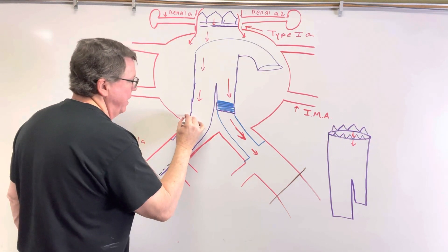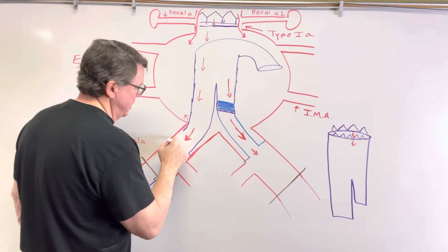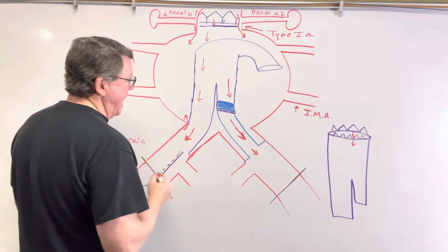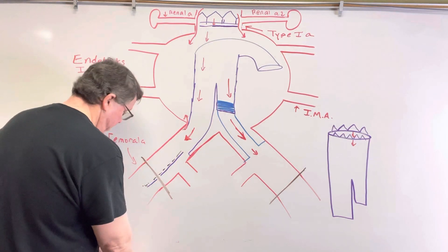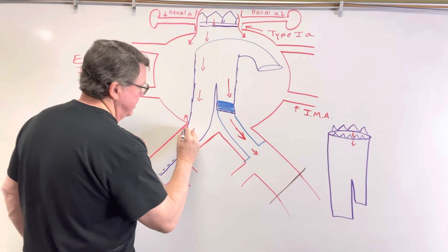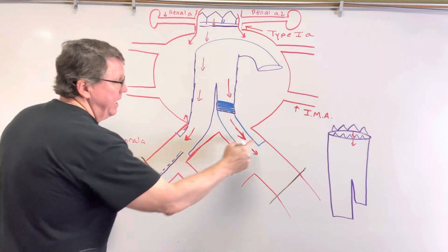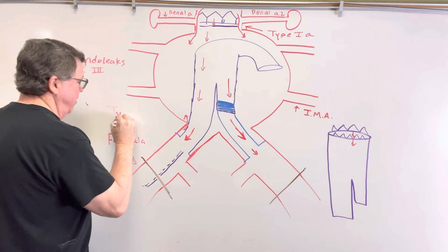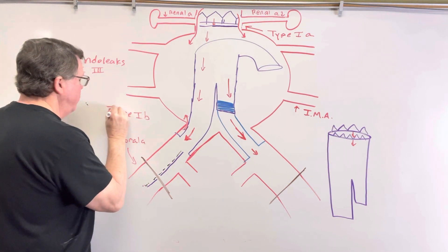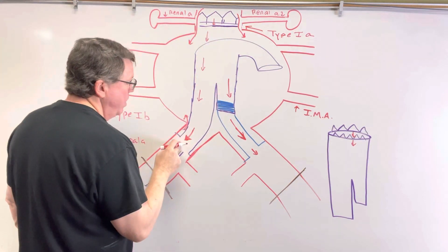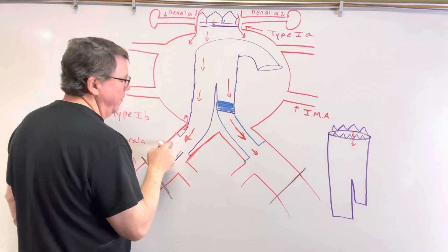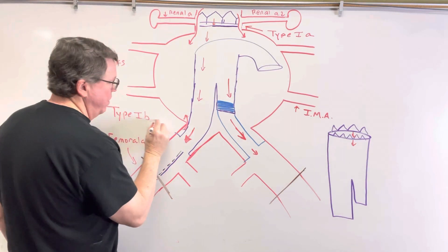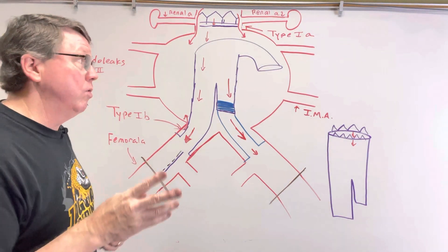I can also have a problem occur down in the iliac area, where blood backs up into the aneurysm if the graft becomes detached down there. They have to go in and reattach it. If the problem is down here in the common iliac artery region, this is going to be called a type 1b endoleak. So type 1a is up at the abdominal aorta, and type 1b is down in the common iliac artery.